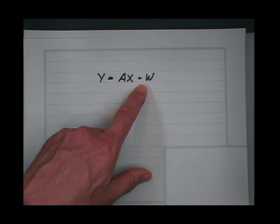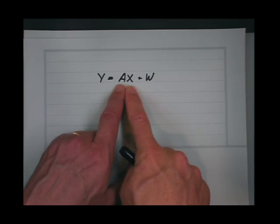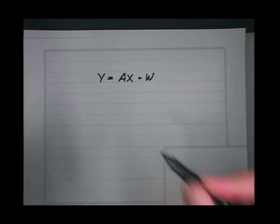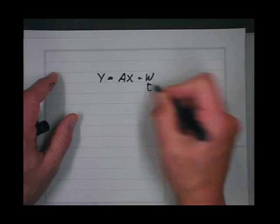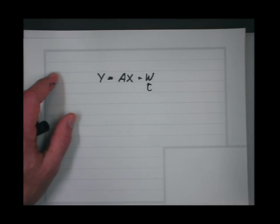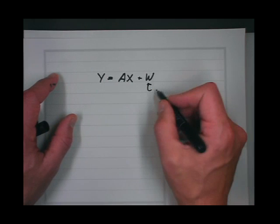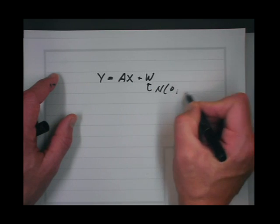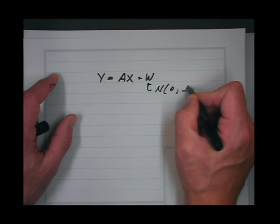But let's say here we have additive noise, and the noise is independent of x. I'll generalize this a little bit: the noise would be normal with mean zero and variance lambda inverse.